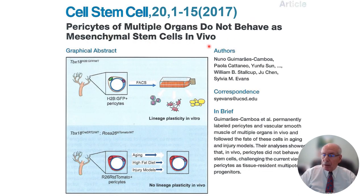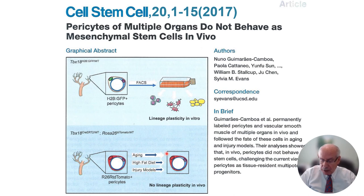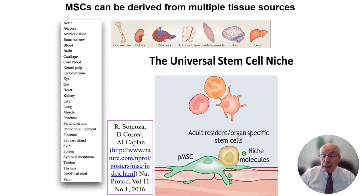Here's a published article that completely supports that. In rodents, if you have a labeled pericyte — colored red — and you have an aging animal, or an animal making a ton of fat on a high-fat diet, or a broken leg, the pericyte stays on the blood vessel. It never goes into fat, it never goes into bone. The pericyte stays as a pericyte. Therefore, no lineage plasticity in vivo. In vitro, no problem. In vivo, big problem.